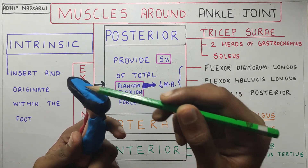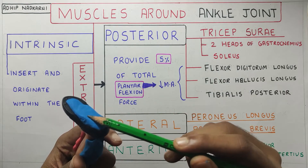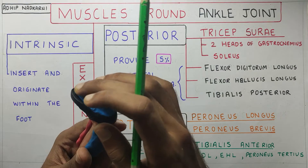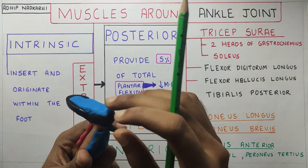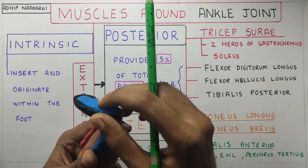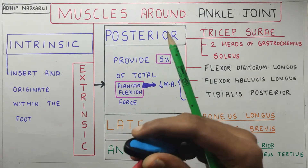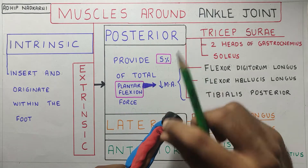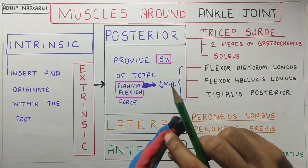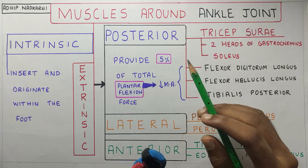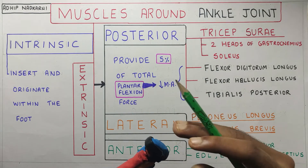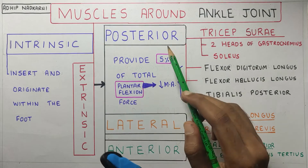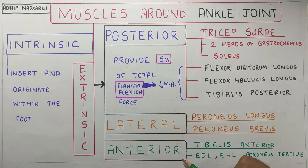The intrinsic muscles originate and insert within the foot — you can see these muscles on the plantar aspect of the foot. Whereas the extrinsic muscles come from above and attach at the foot, crossing the ankle joint. So all the muscles around the ankle joint cross at least two joints. The extrinsic muscles are divided into posterior, lateral, and anterior compartments.